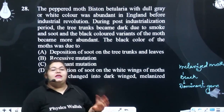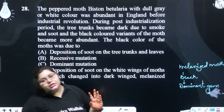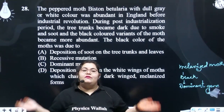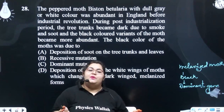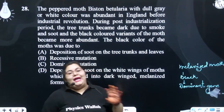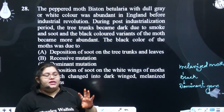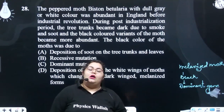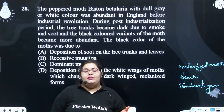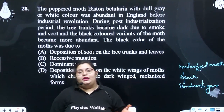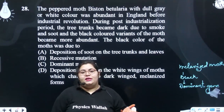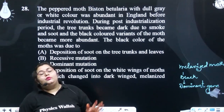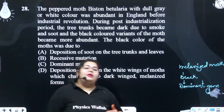But as environmental conditions changed and soot covered the trees, the black moth was not subject to predation. It survived due to protective coloring and camouflage, and this led to an increase in the number of the black or melanized moth.